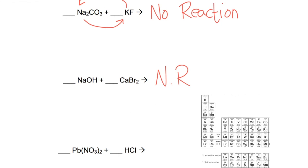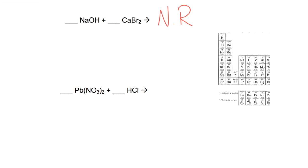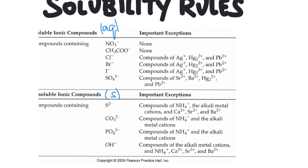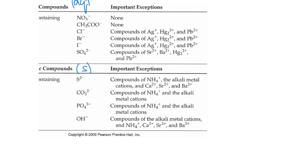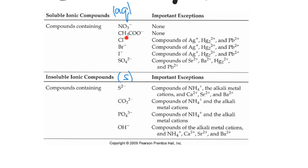Let's try one more: lead nitrate reacting with hydrochloric acid. Even though HCl doesn't look like a typical ionic compound, hydrogen acts as an H⁺ ion, so it works just like the other double displacement reactions — the two cations swap places. Hydrogen bonds to nitrate, and since compounds containing nitrate are always aqueous with no exceptions, that product is aqueous. Then lead moves in and bonds with chloride. Chloride compounds are generally soluble, but lead is one of the exceptions, so lead chloride will be a solid.